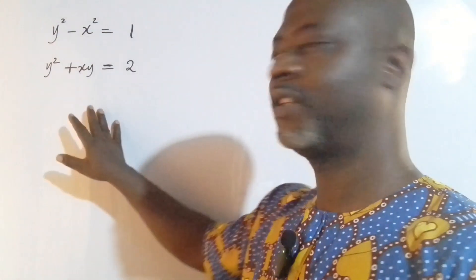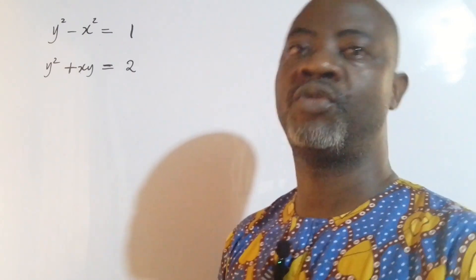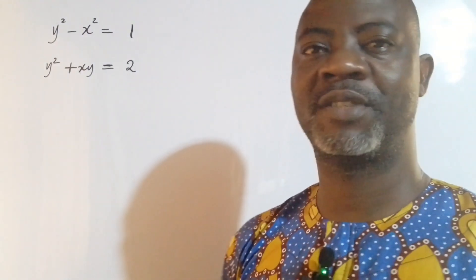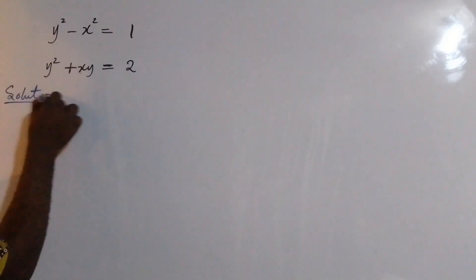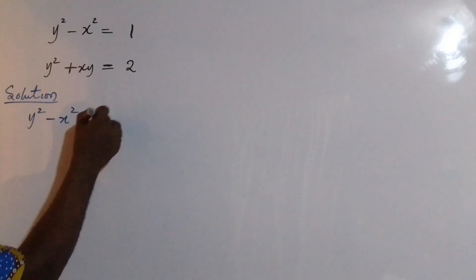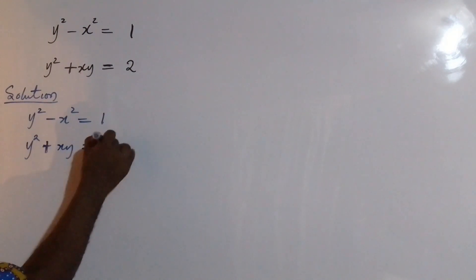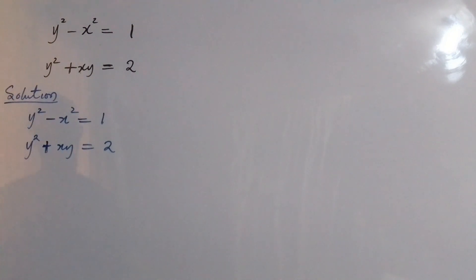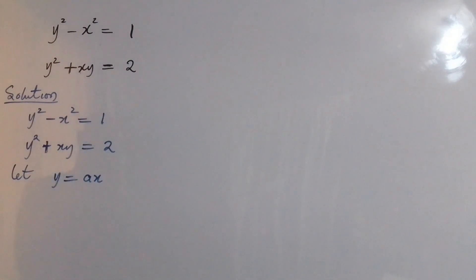There are two approaches in solving this question. Today I'm going to look at one of the methods, and in a subsequent video I will look at the other method. So without wasting much time, let's go ahead. The method I'm going to use for this solution will be: let y equal to ax. So let y equal to ax, meaning anywhere there is y we are going to replace it with ax.